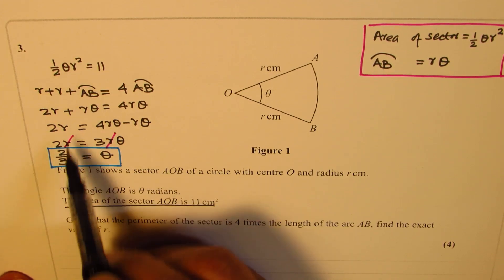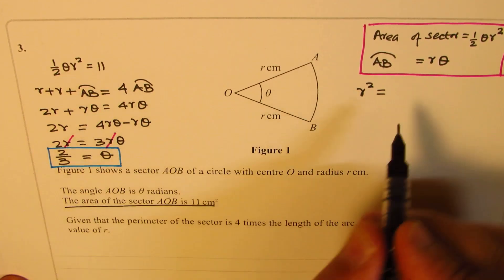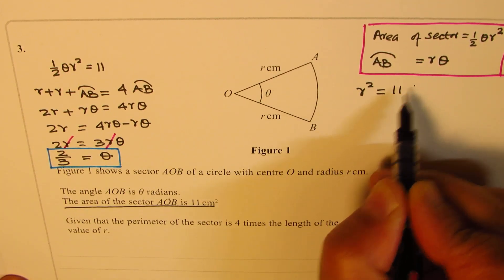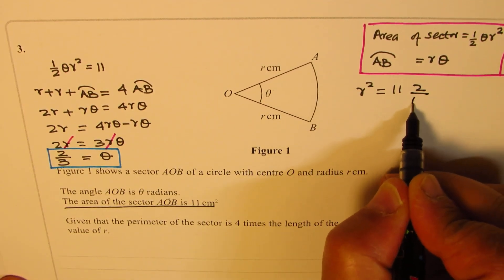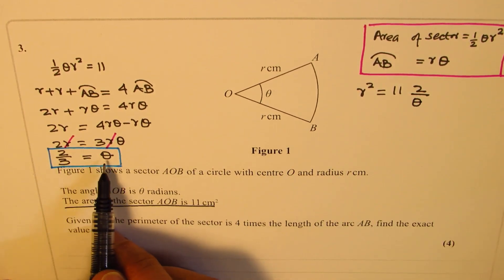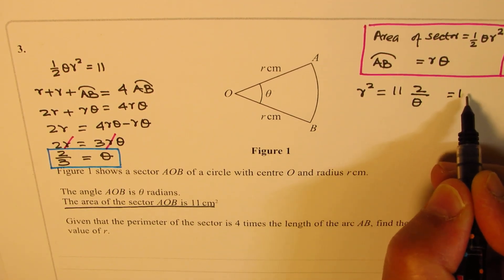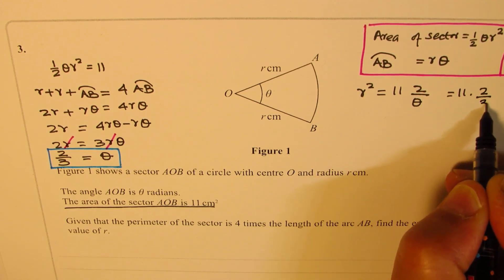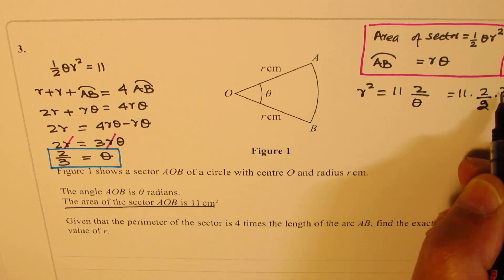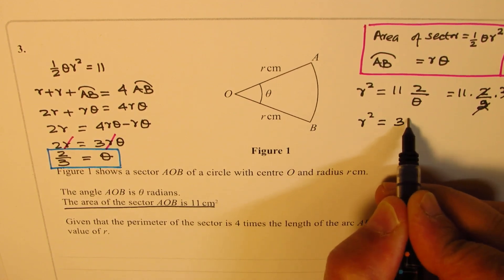So what we have here is r squared is equal to 11 times 2 over theta, times 2 over theta. We just found that theta is 2 over 3, so we could write this as 11 times 2 over 2 times 3. So that is 2 over 3. Now 2 and 2 cancel, so we get r squared equals to 33.